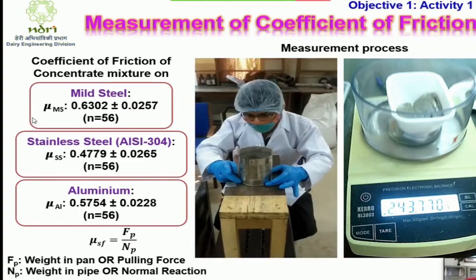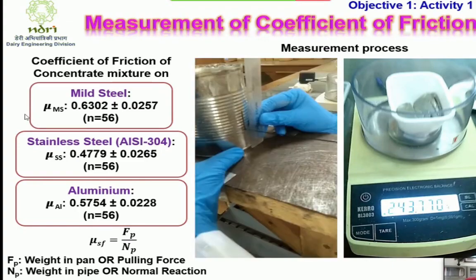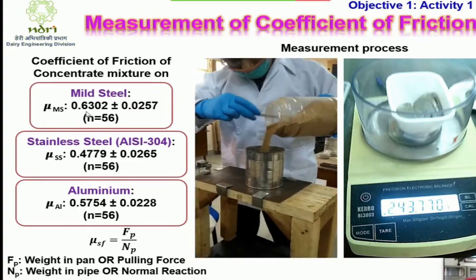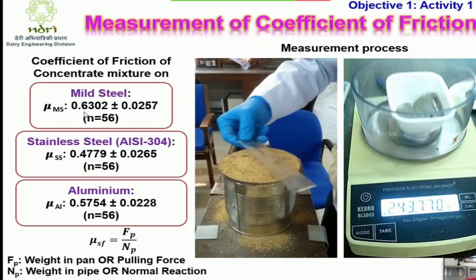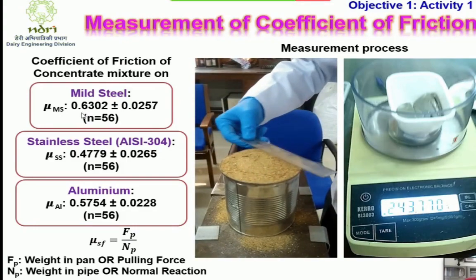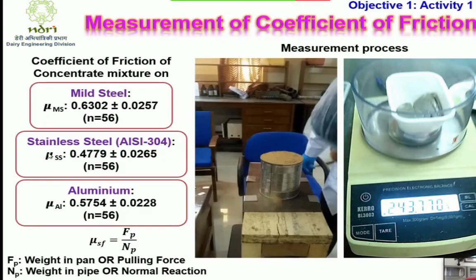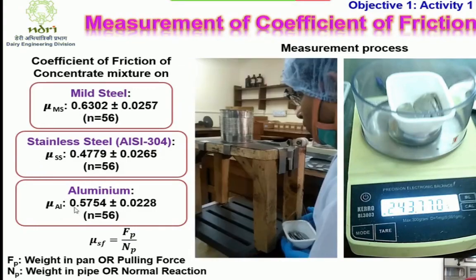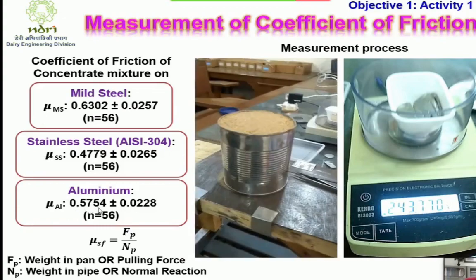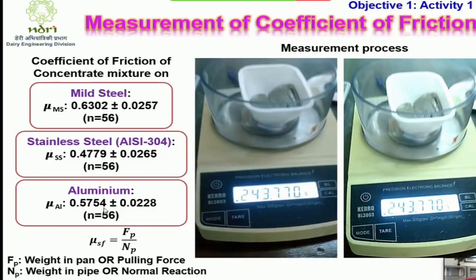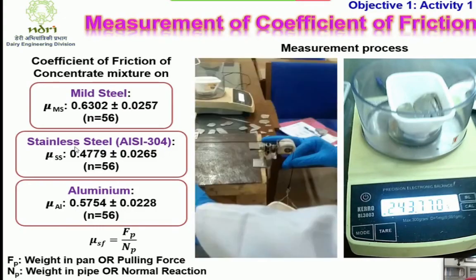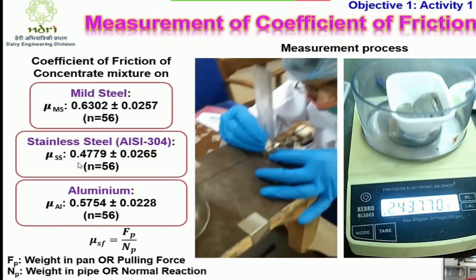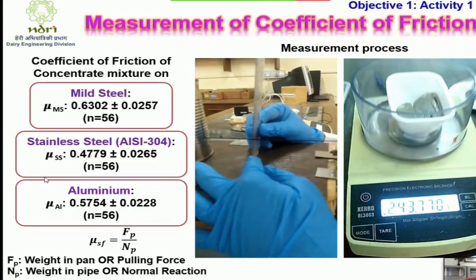It was found that the coefficient of friction for mild steel was the highest at 0.6302, followed by aluminum at 0.5754, and finally stainless steel had the lowest coefficient of friction at 0.4779.